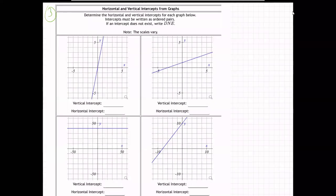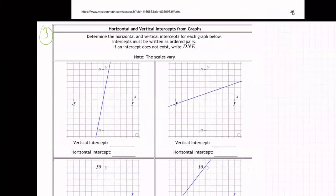Okay, so on this question, it's saying it wants us to determine the horizontal and vertical intercepts for each graph below. Okay, so intercepts must be written as ordered pairs. Let's look at this first one here.